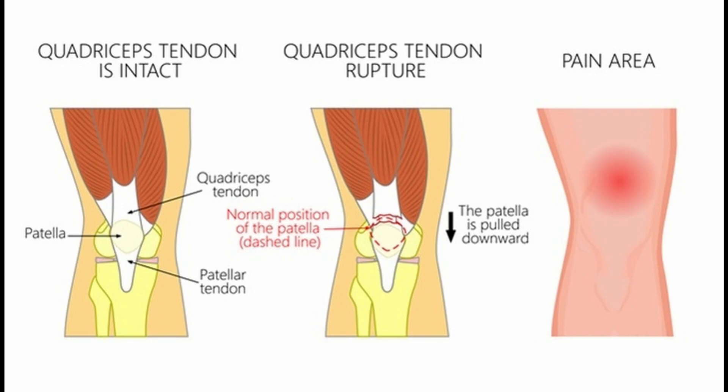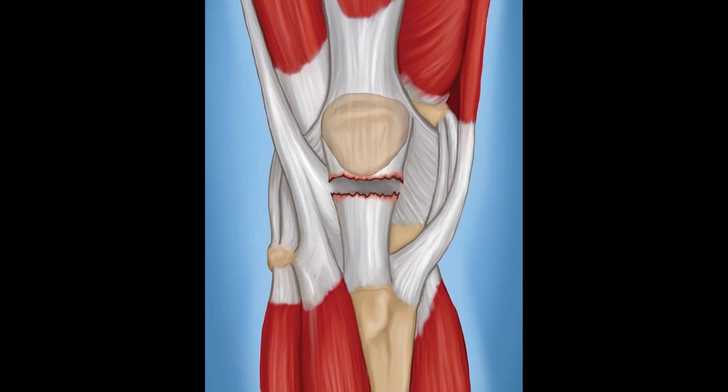A quadriceps rupture is exactly as the name suggests — a complete or incomplete rupture right across your quadriceps. Most commonly it occurs one to two centimeters above the superior pole of the patella, which is basically a fancy name for the top of the patella. If the tear occurs below the kneecap, it's actually called a patella tendon rupture, and that's something else altogether.